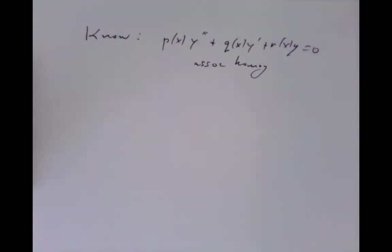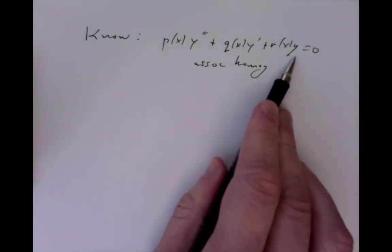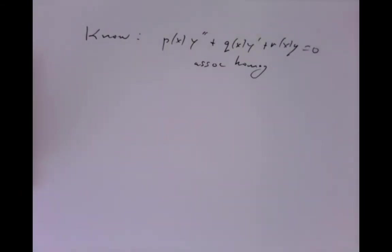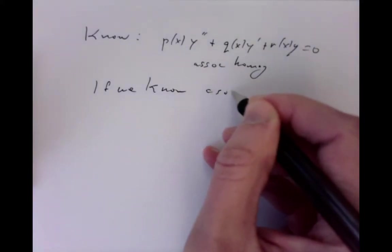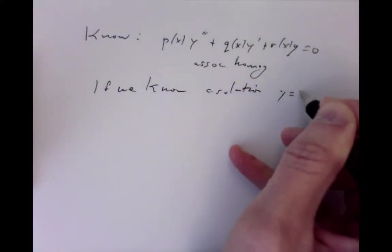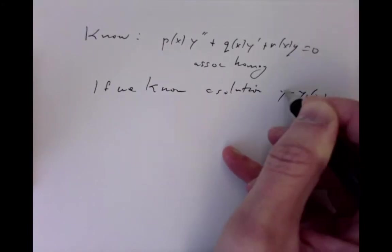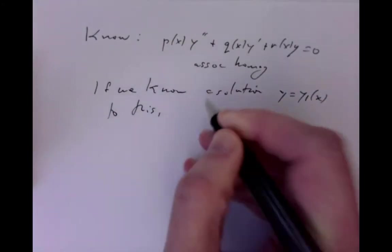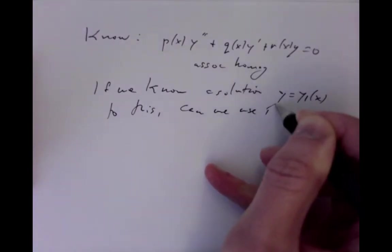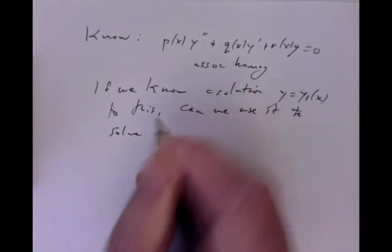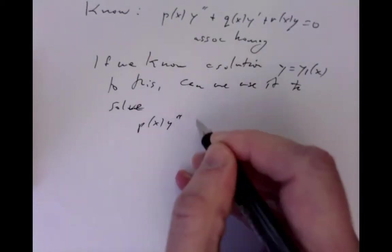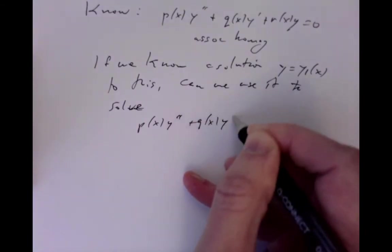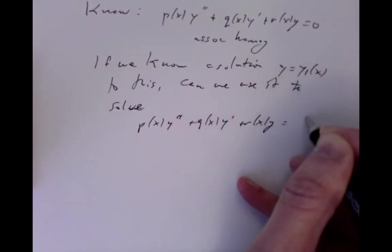Now we want to find what happens if we want to put in an inhomogeneity. If we know a solution y = y1(x) to the homogeneous equation, can we use it to solve for some other equation with the same operator but with inhomogeneity equal to some f(x)?